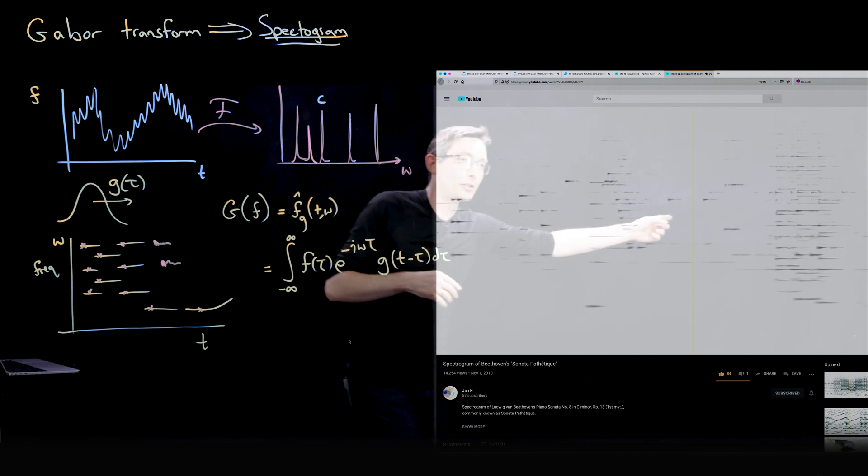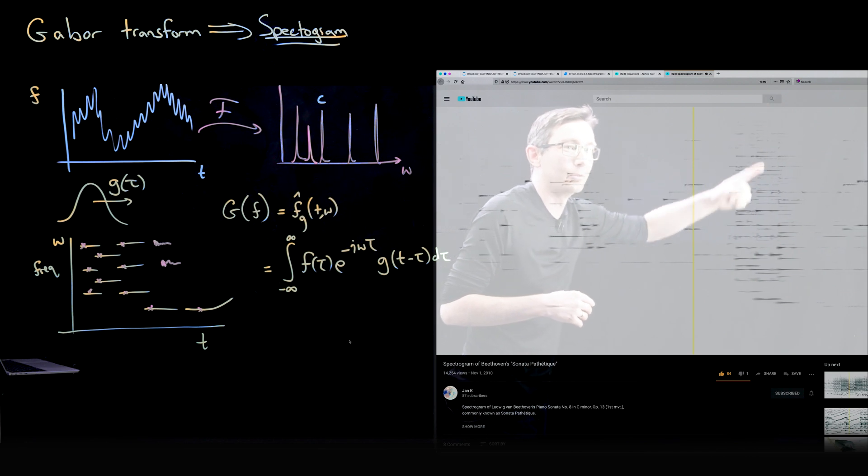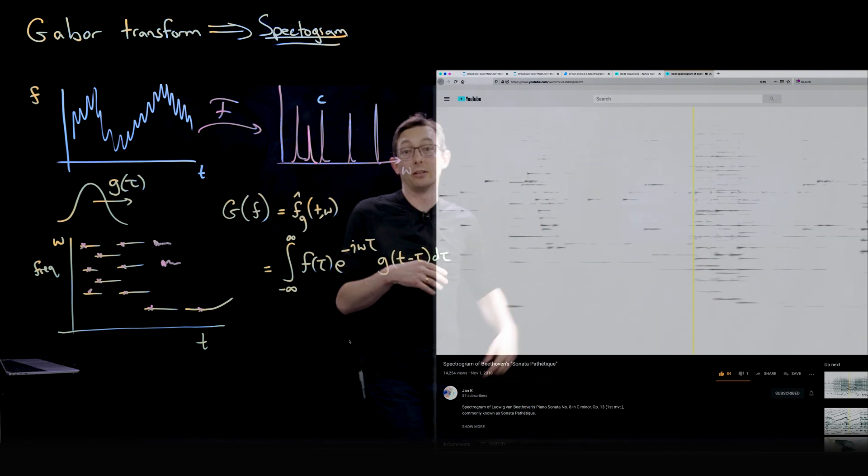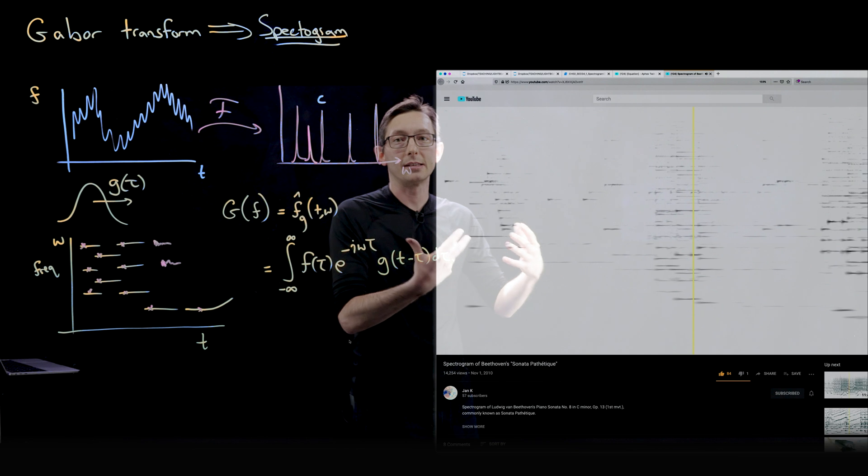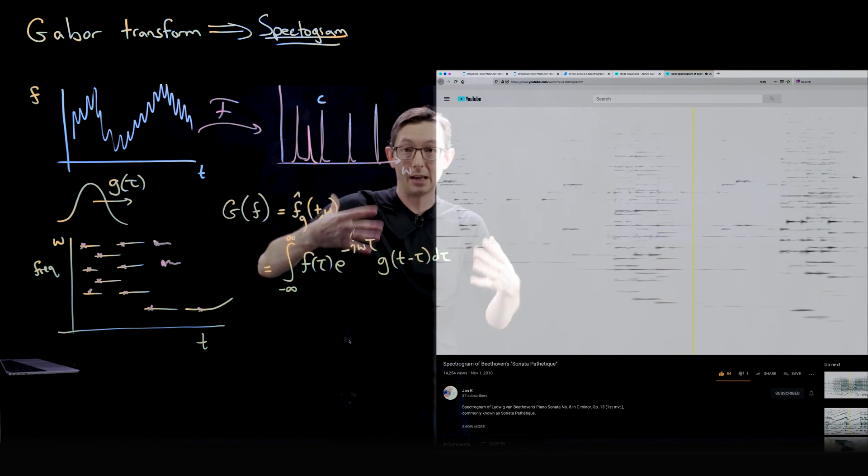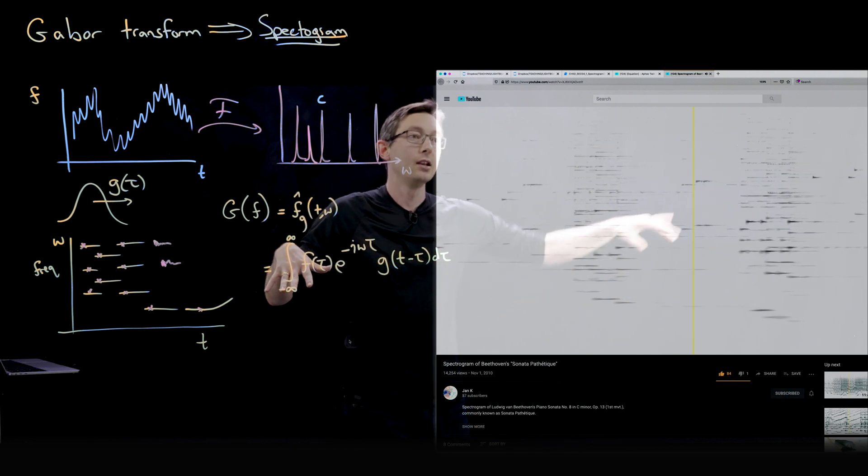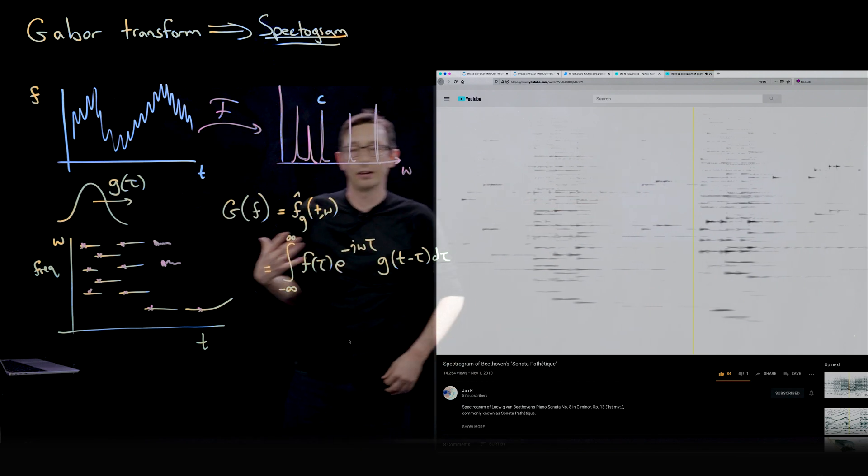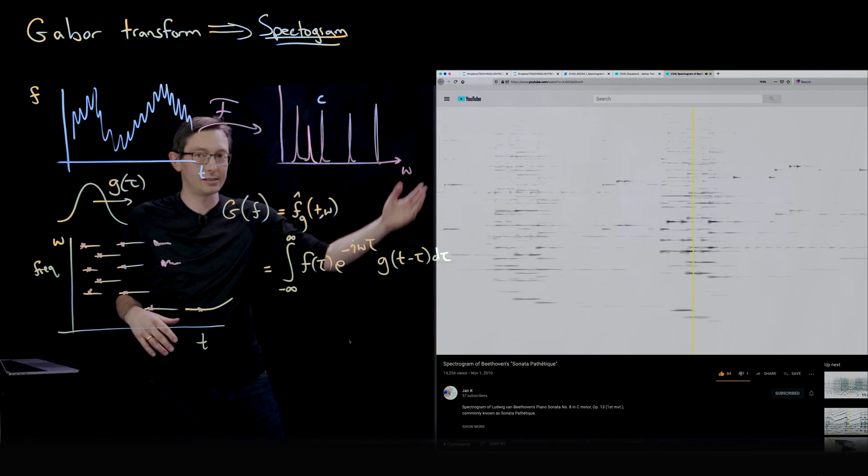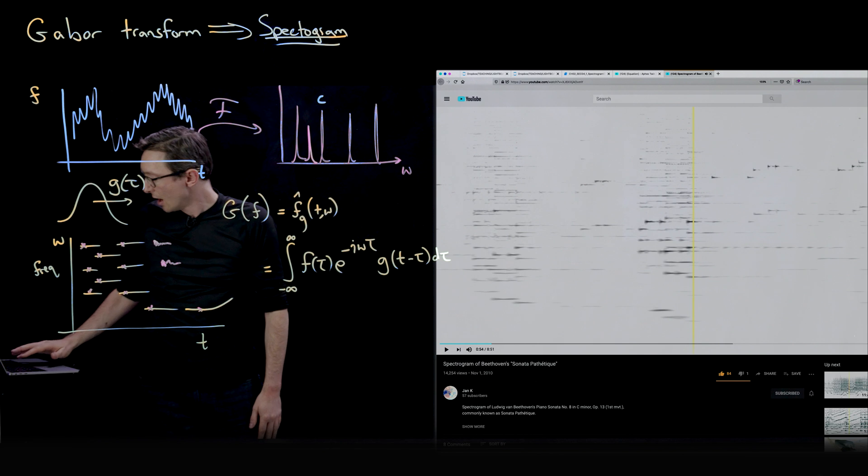And I think it's also interesting. I always joke with my class, Beethoven didn't have 50 fingers. These are kind of harmonics that are being generated in the piano from these chords. And so you can see all of that rich structure in this spectrogram. Okay, good.